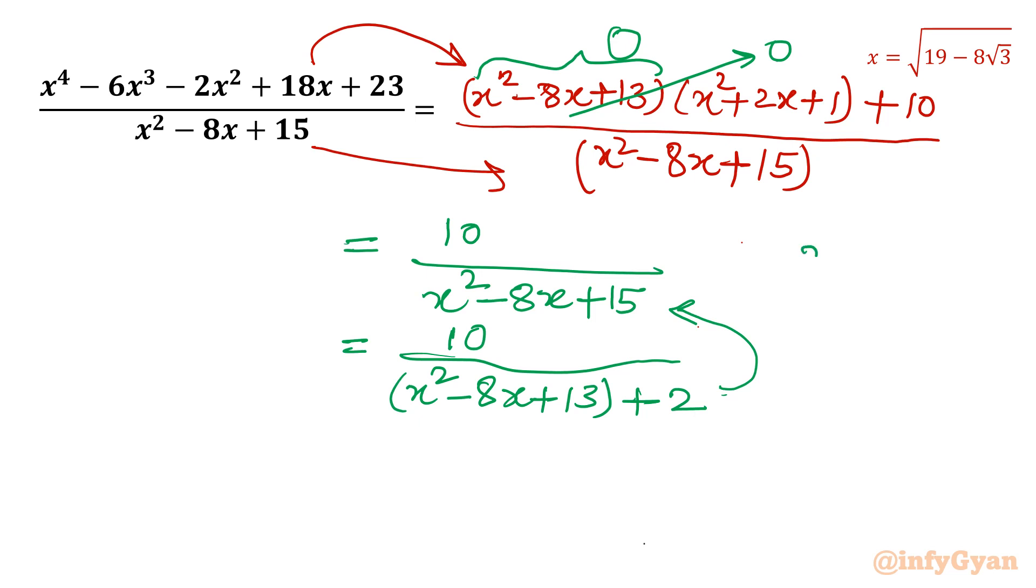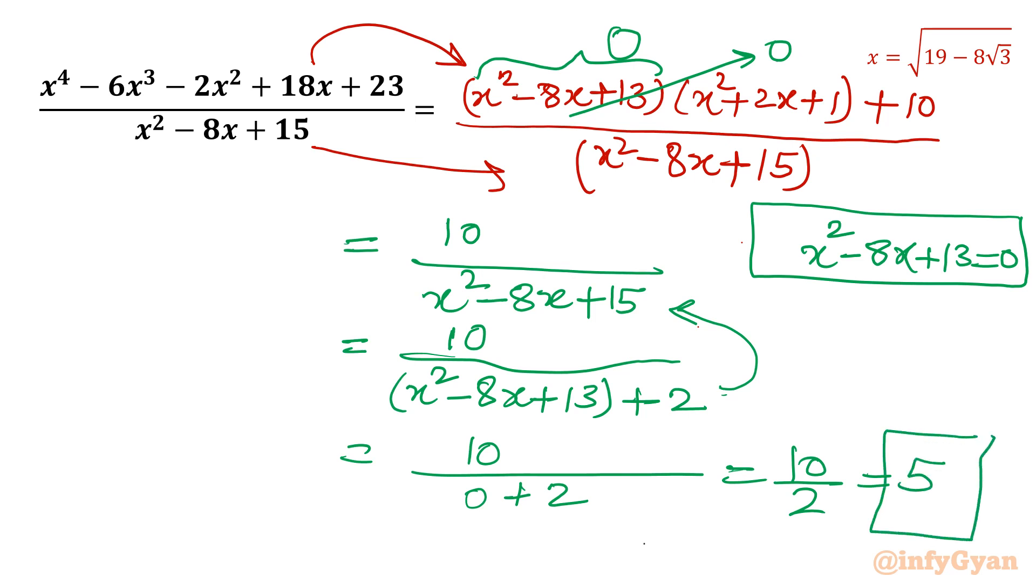Now we know that x^2 - 8x + 13 = 0. So I will put the value here. I will be having 0 + 2. So it will give us 10 over 2 which is 5.